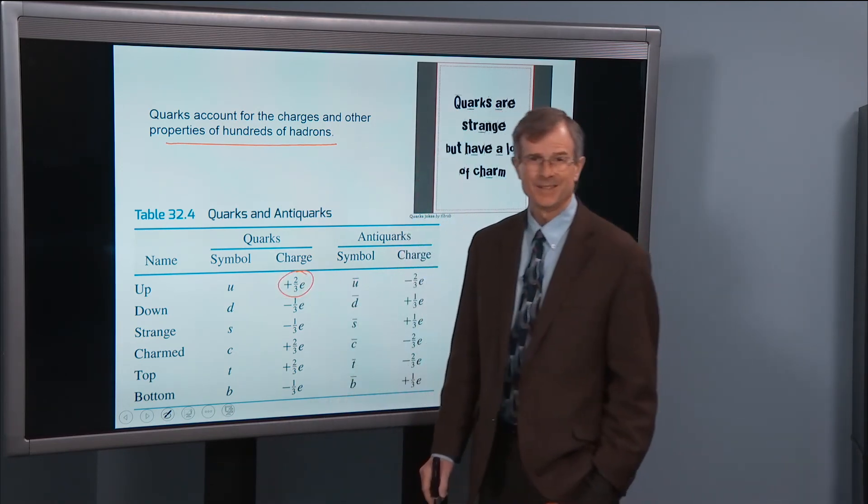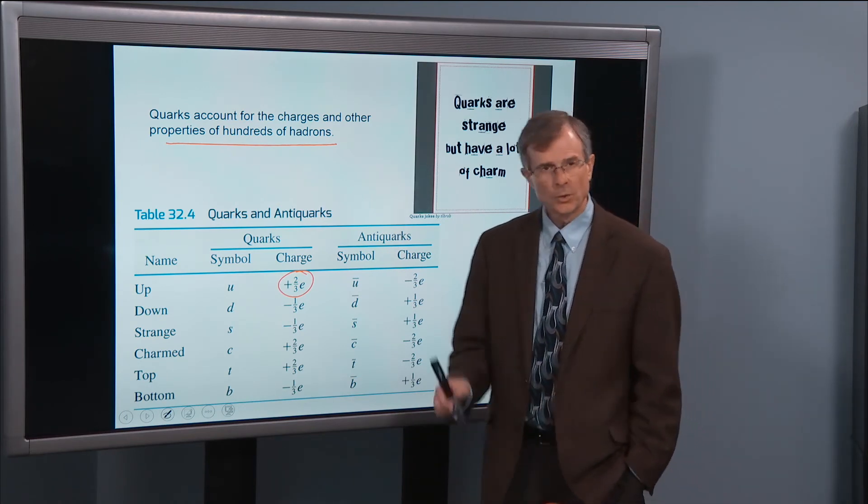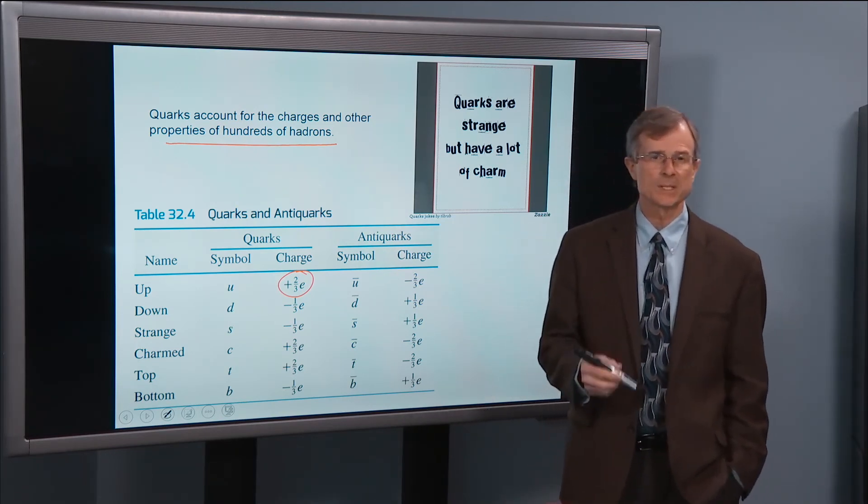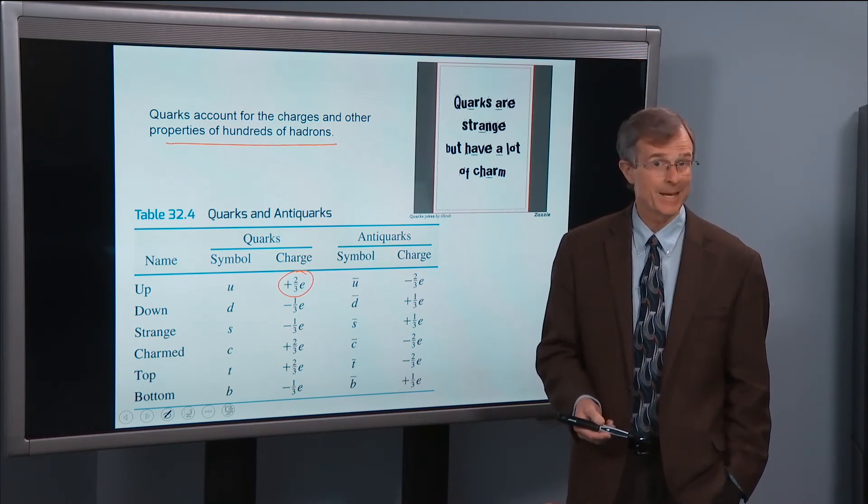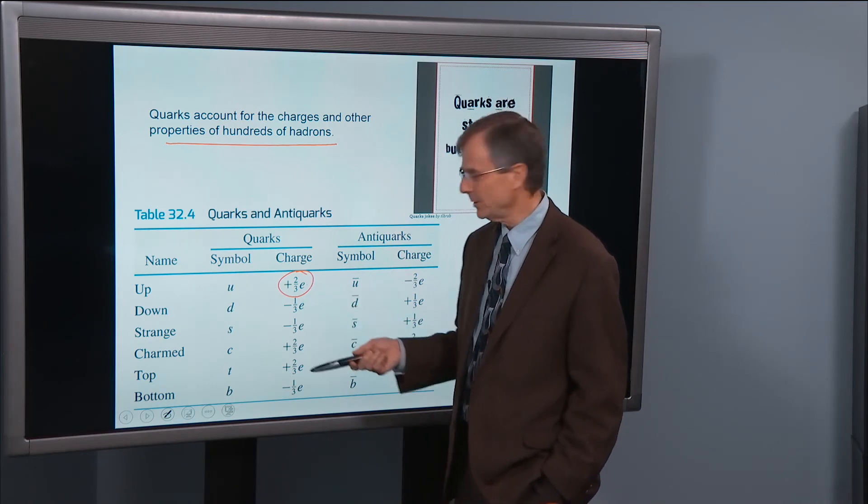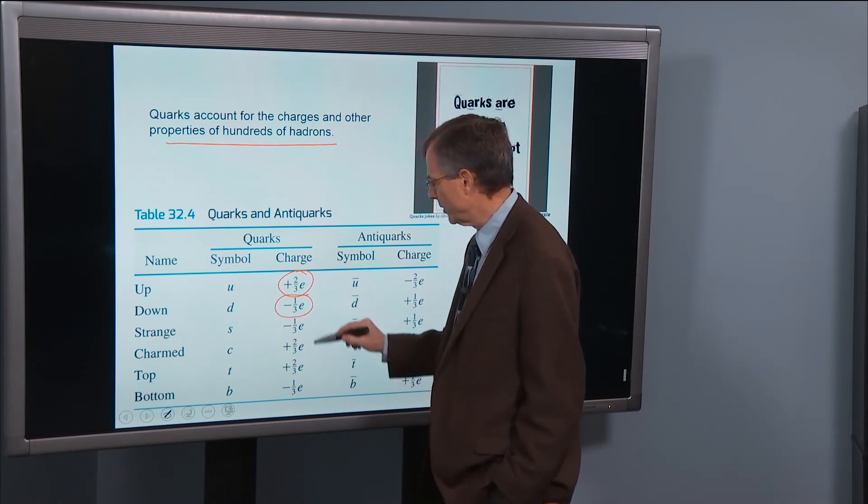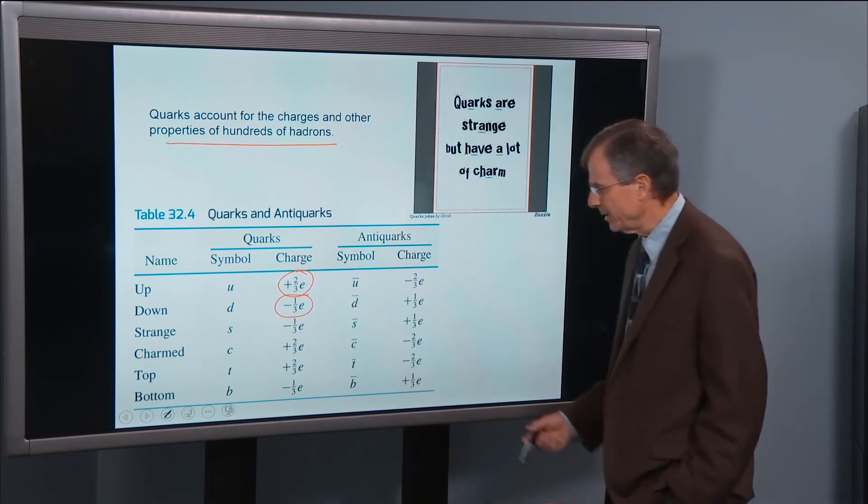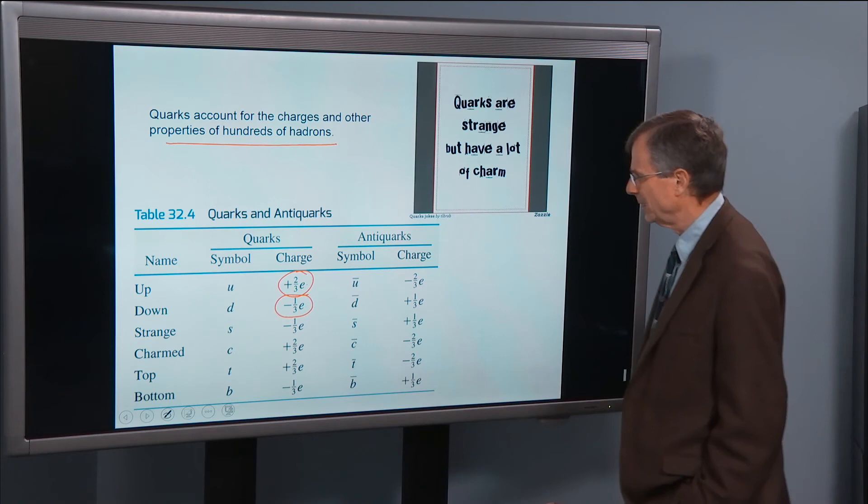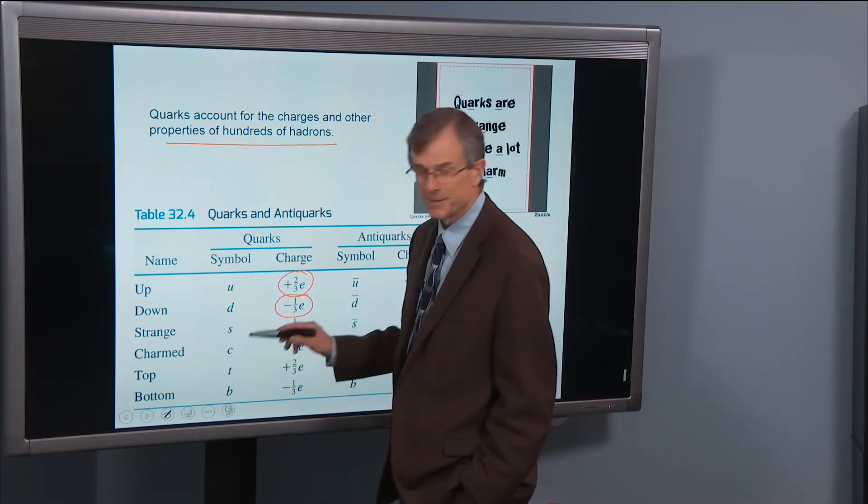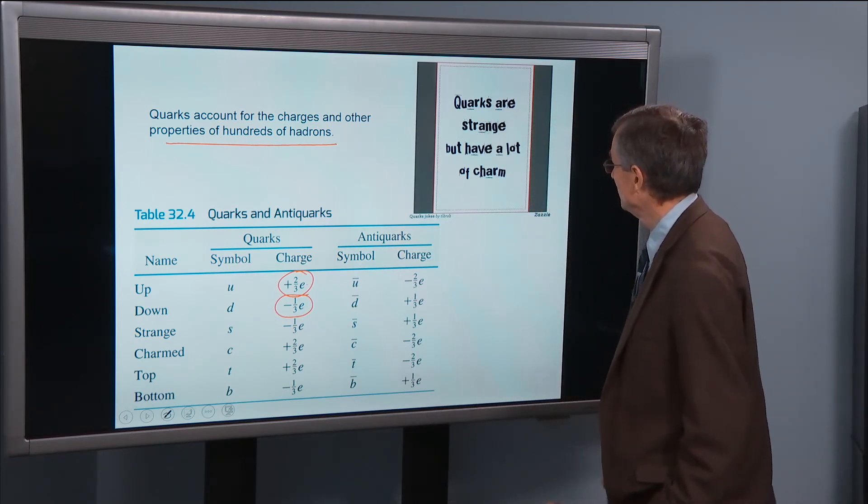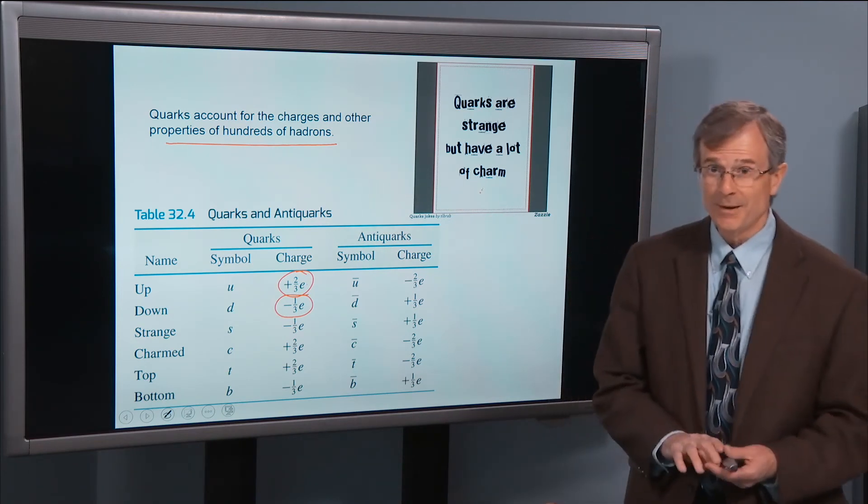Some have two-thirds of the electronic charge. So when I told you before that the smallest amount of electronic charge is E, 1.6 times 10 to the minus 19 Coulombs, I lied. Because here, you get two-thirds of E, and here we have a minus one-third. So you're talking either about minus one-third or plus two-thirds of the basic charge. There's the up, the down, the strange, the charmed, the top, and the bottom quark. Quarks are strange, but have a lot of charm.